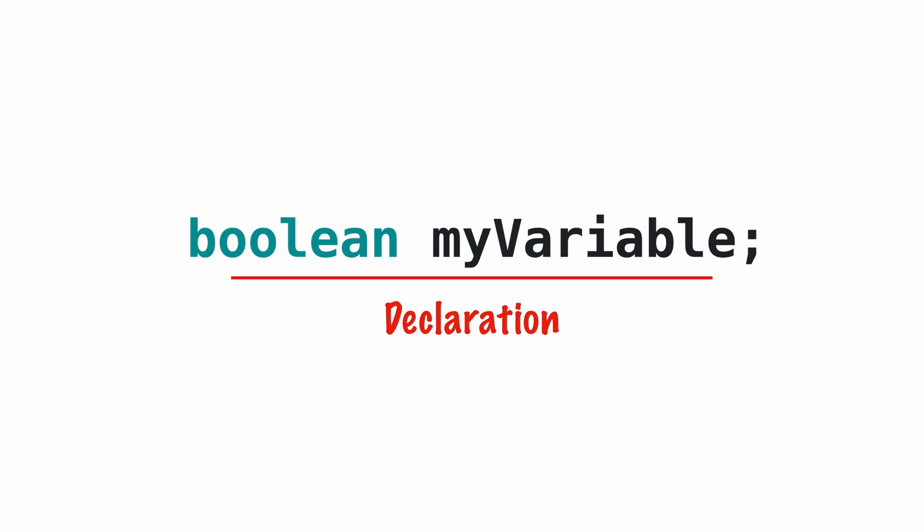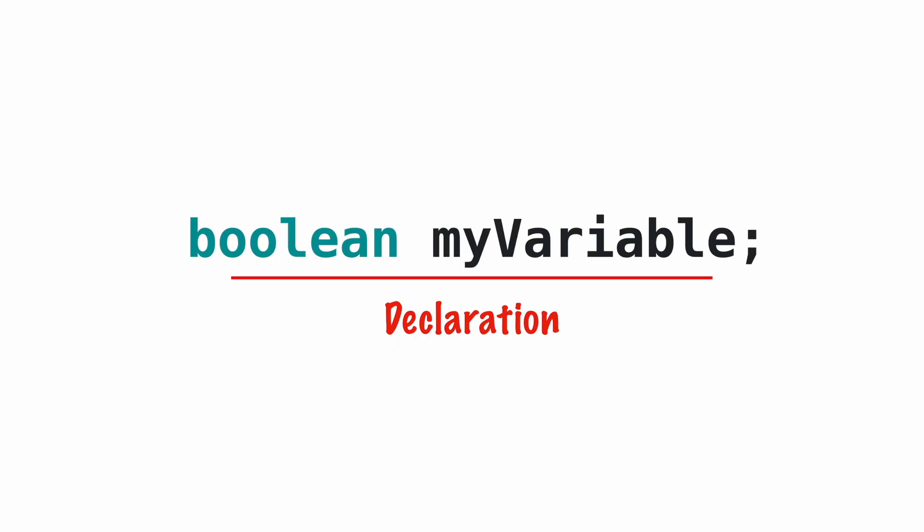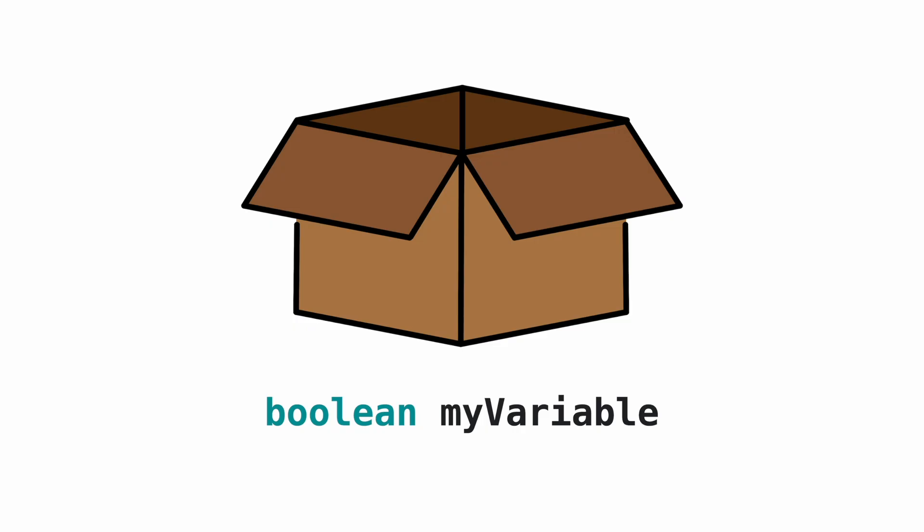If you put these two together and make it a statement, it is called a declaration. It reserves a space in the memory of Arduino for your variable, and based on the type, Arduino knows how much memory needs to be reserved. Variables are like storage boxes. 'Boolean myVariable' means that we need a storage box of type Boolean with the name myVariable.